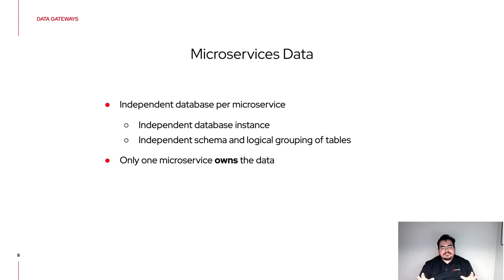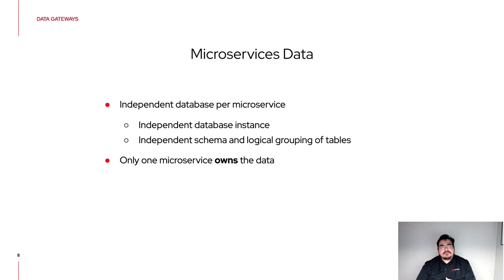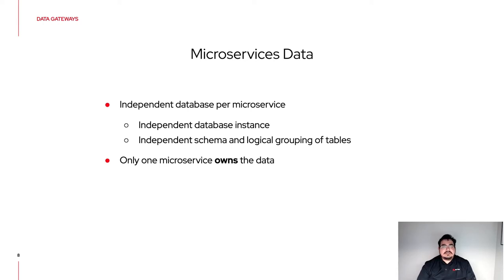The other option for independence is using the exact same database instance but having separation between schemas — if the database supports schemas — or grouping of tables. A set of tables is owned by one microservice, and the only way to access that data is through that service. Another service manages its own tables from its own perspective. There are different ways to handle this level of independence, but the focus is that just one microservice owns the data and you are not sharing that information at the storage level.